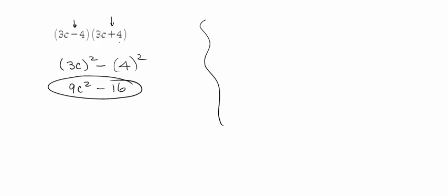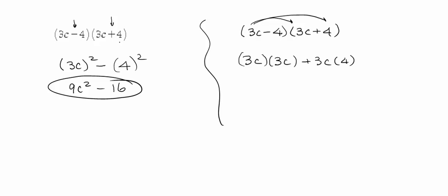Again, we could have gone the long way and multiplied everything out. We have (3c - 4)(3c + 4).